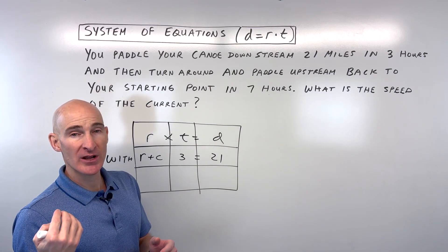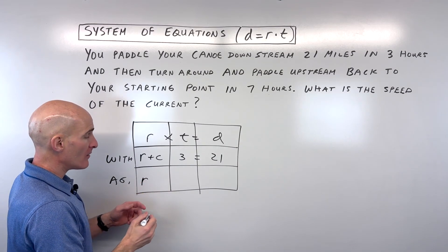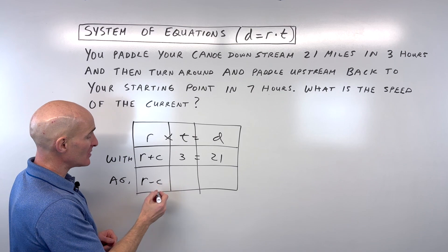Now when you're going back upstream, the current is opposing you, right? So it's slowing you down. So it'd be the rate of your paddling in normal still water minus the speed of the current, because again it's going against you.